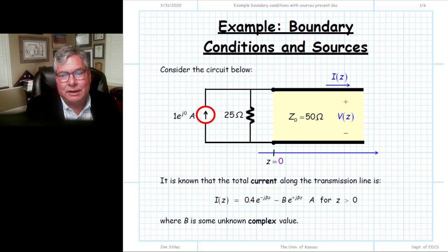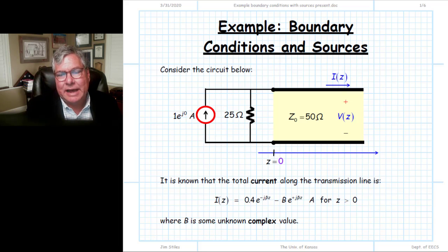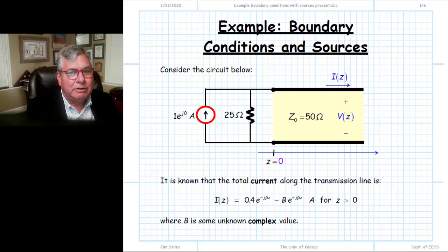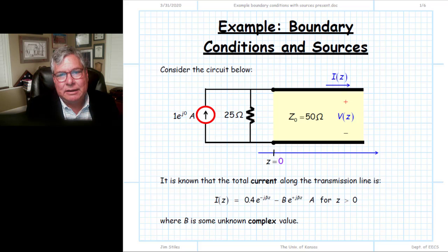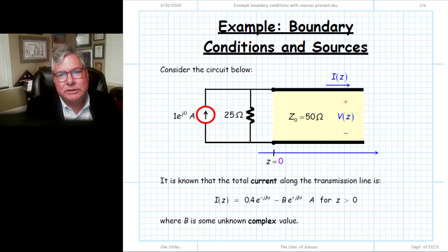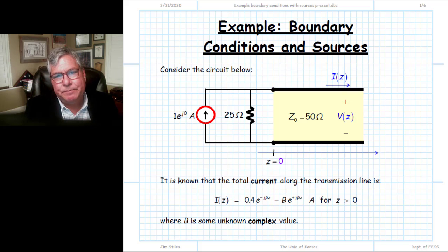We apply boundary conditions to determine the behavior of a transmission line terminated in some passive load. That was fairly simple — applying KVL and KCL to the load current and load voltage, and Ohm's law allowed us to determine that the line impedance at the end of the line must equal the load impedance, or equivalently the reflection coefficient at the end of the line must equal the load reflection coefficient. Applying boundary conditions to solve transmission line problems is a very important concept, and there are many cases where those boundary conditions are more complex than what is presented by a simple passive load. Certainly the Thevenin source from the previous unit is one such case.